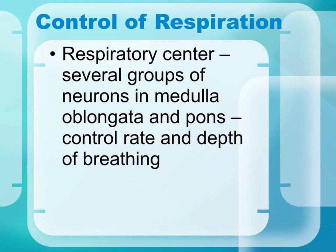Recall from the nervous system that the control center for respiration is in the brain. The medulla oblongata and the pons control the rate and depth of breathing. The medulla oblongata is the main structure that controls respiration, while the pons plays a role in depth — meaning how much air is moved — whereas rate means how fast you are breathing.